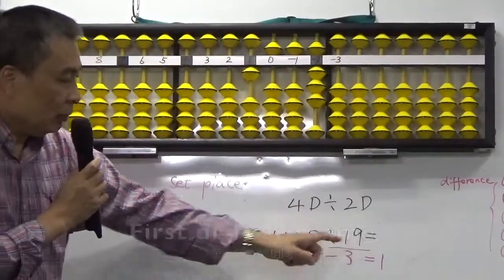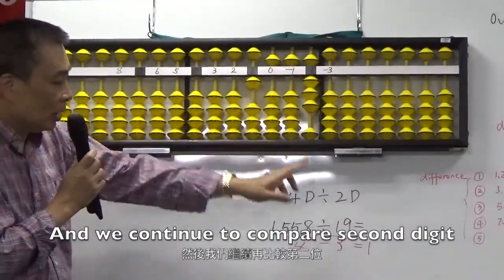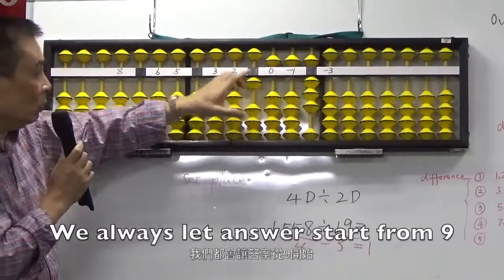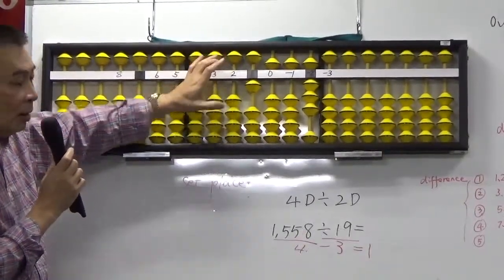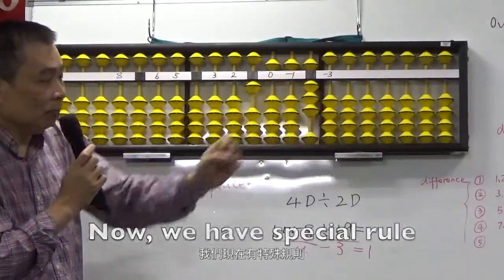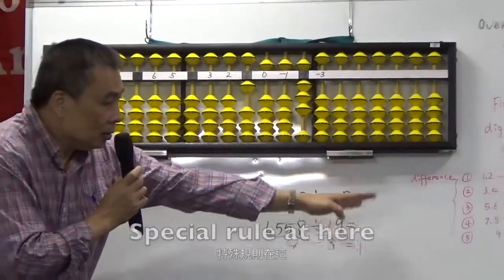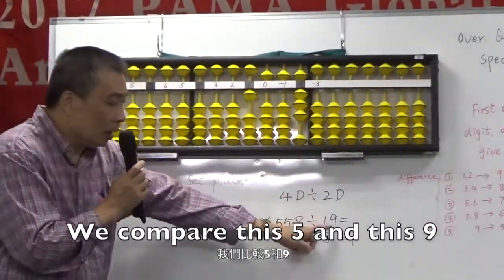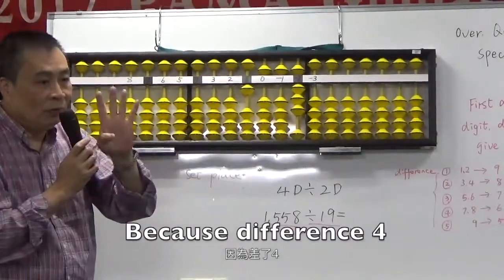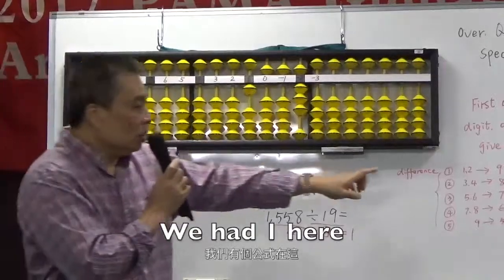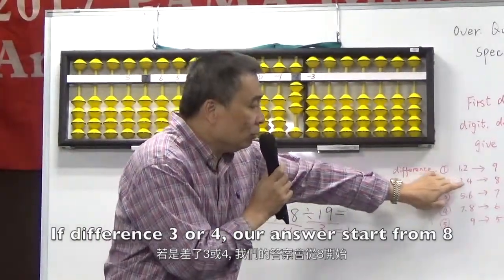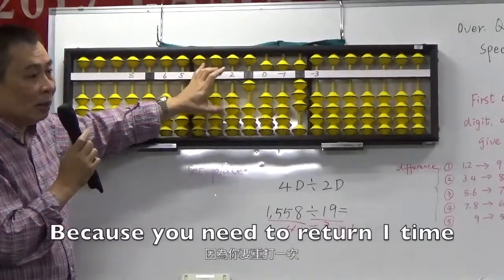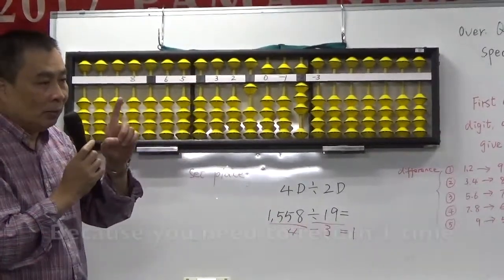We compare first — first is same. And we compare second, continue. Before, if the digits are small, we always put the answer starting at nine. But now we have a special rule. We compare the second digit: we take this five and this nine to compare, because the difference is four. The rule says: if different is three or four, we answer start eight. So we don't need a front nine, because front nine requires retaining one more time.